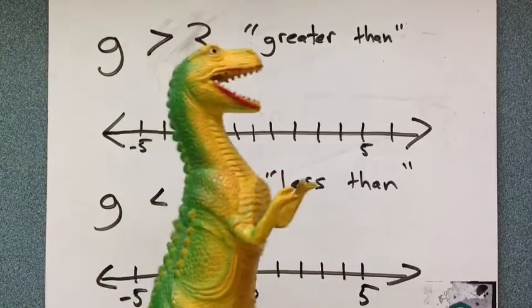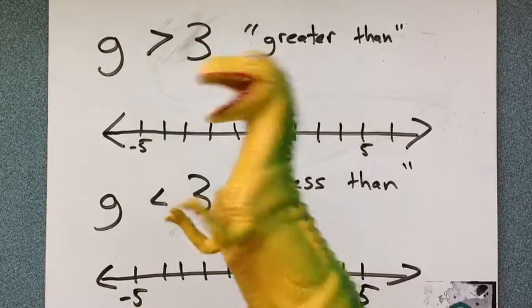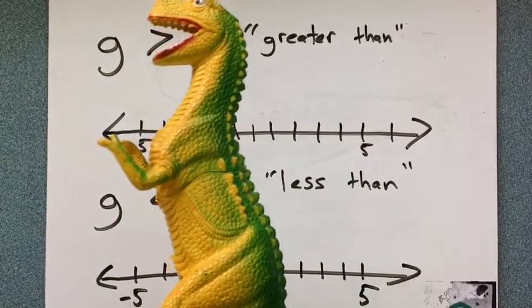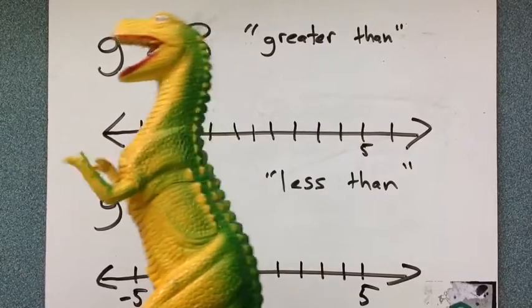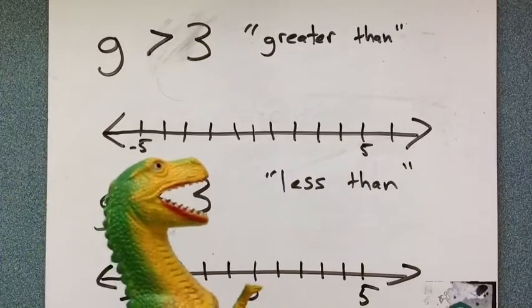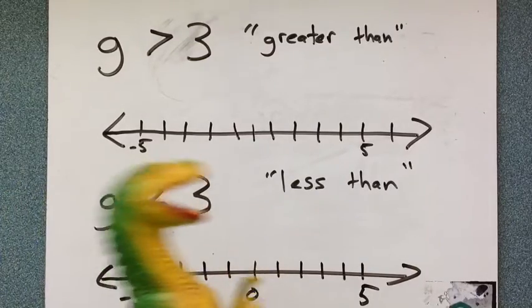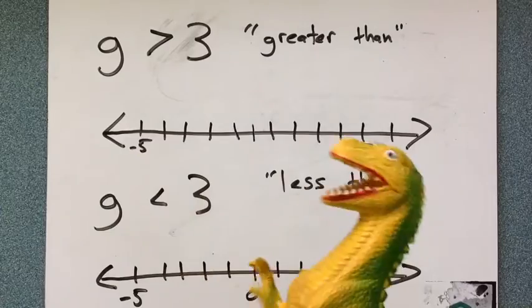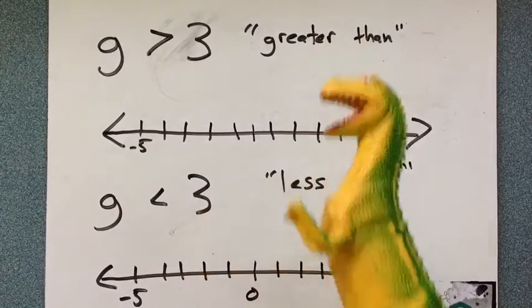G is greater than 3. Now you can think about this greater than symbol like my mouth. I want to eat the larger number. G is greater than 3. Here, G is less than 3. I'd rather eat the 3 because it's big. So, greater than, less than.